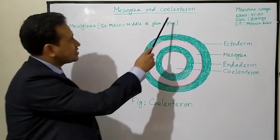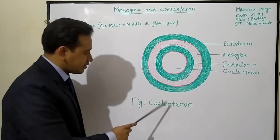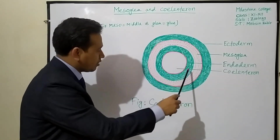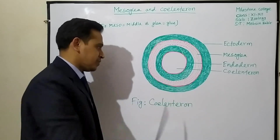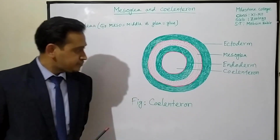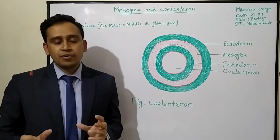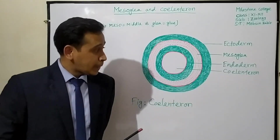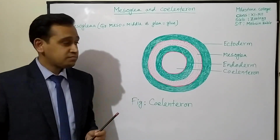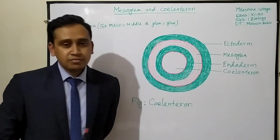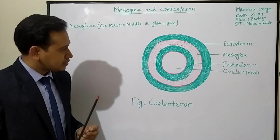The next topic is silenteron. The central cavity of the body which is enclosed by gastrodermis is called silenteron. Silenteron performs different types of physiological functions: extracellular digestion takes place in silenteron, it transports excretive waste, and it transports respiratory gases. That is why the silenteron is also known as the gastrovascular cavity.